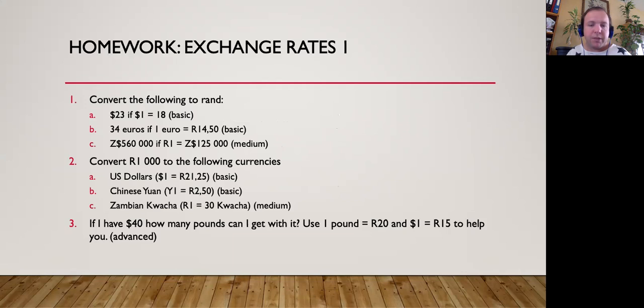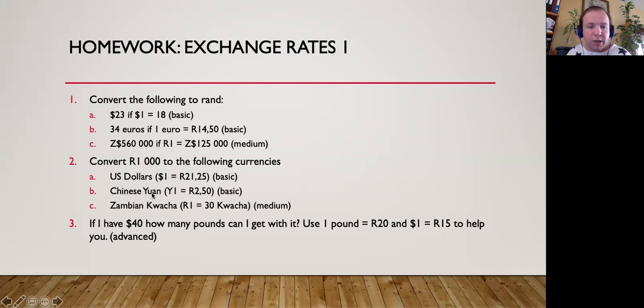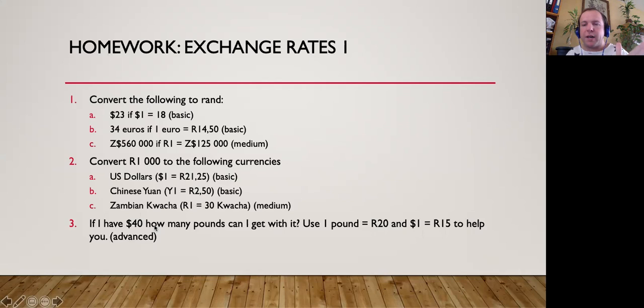Now try this homework exercise. First, convert $23, 34 euros, and 560,000 Zimbabwean dollars into rand using the given exchange rates. Second, convert 1,000 rand to US dollars, Chinese yuan, and Zambian kwacha. Third, if you have $40, how many pounds can you get? Here you're given two exchange rates with no direct rate between dollars and pounds, so first work out how many rand you get for $40, then convert that into pounds — you have to go via the rand to find the answer.